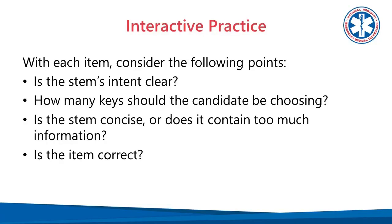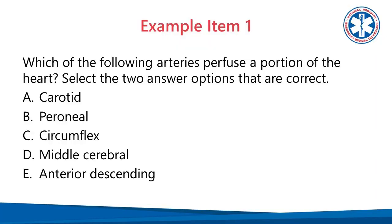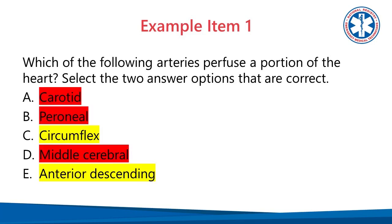Review each practice item with these points: Is the stem's intent clear? How many keys should the candidate be choosing? Is the stem concise or does it contain too much information? And is the item correct? In this first example, the item asks: which of the following arteries perfuse a portion of the heart? Select the two answer options that are correct. The keys are the circumflex artery and the anterior descending artery; the distractors are the carotid, perineal, and middle cerebral arteries. This is a good test item — the stem is concise, the options are concise, and the options are referenced.